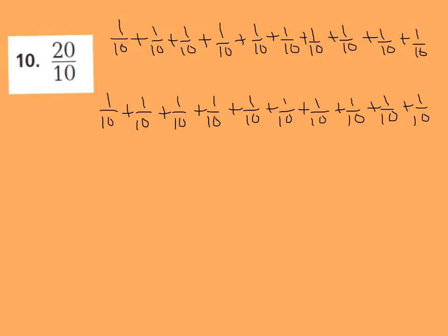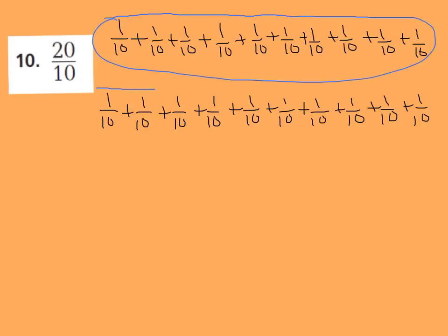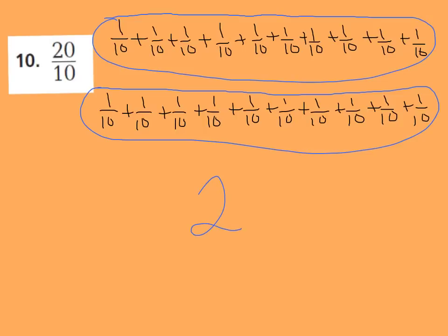Number 10: I have 20 tenths, and I need to change that to a mixed number. I turn 20 tenths into unit fractions — 1 tenth, 20 times. I group my 1 tenths together in groups of 10, since 10 tenths equals a whole. I get two complete groups of 10, making 2 wholes, with no fraction parts left over. So 20 tenths equals 2. I could also do it the division way: 10 goes into 20 two times.